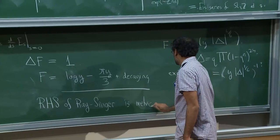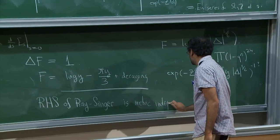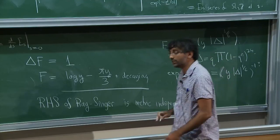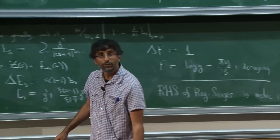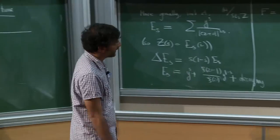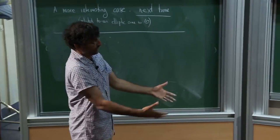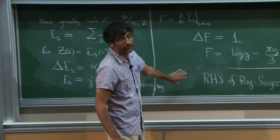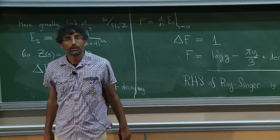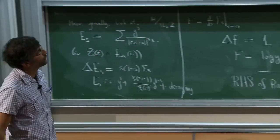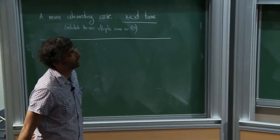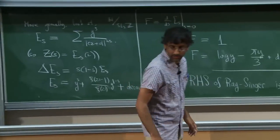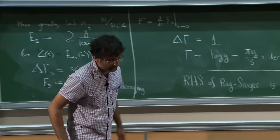The moral is that these Laplacian determinants are very difficult to understand directly, but you can understand how they vary when you change parameters — you can differentiate them. Ray and Singer realized they were onto a good thing because the right-hand side of their formula involves determinants that they found to be metric-independent. If you have a metric-invariant of a manifold which is independent of the metric, it's reasonable to think it's something purely topological.